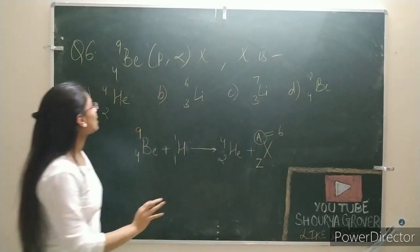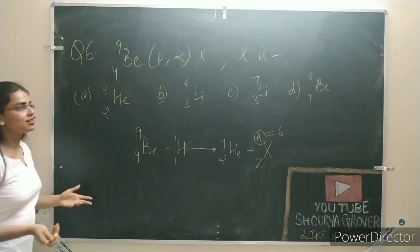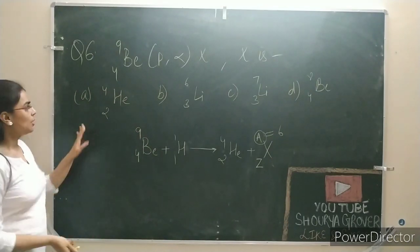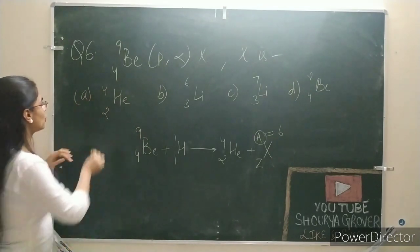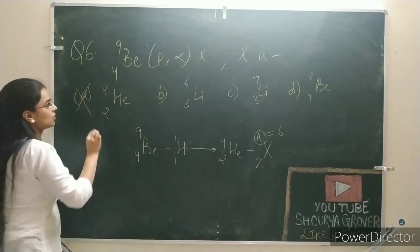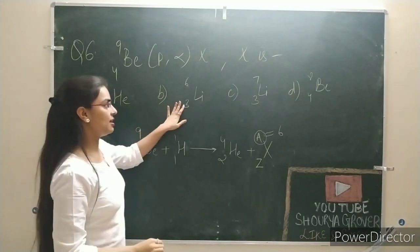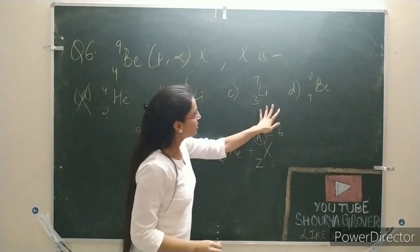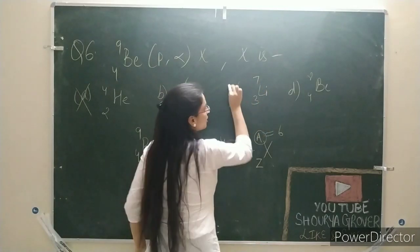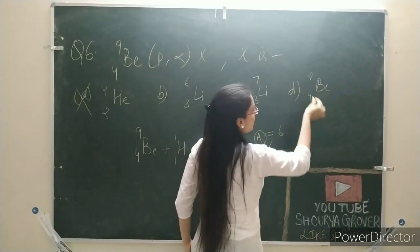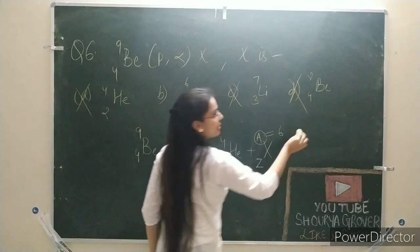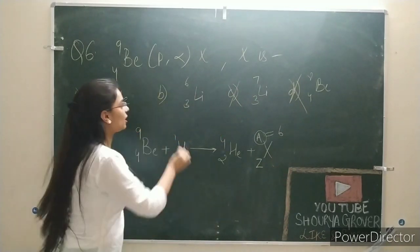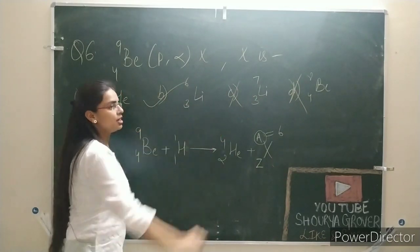Now let's check the options: first is 4, second is 6, third is 7, last is 8. So our answer will come — option B (A = 6).